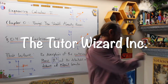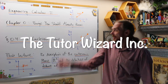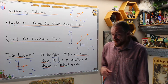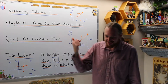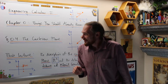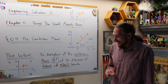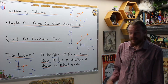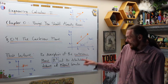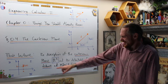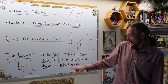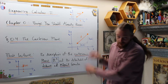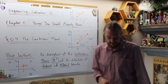Alright, welcome back. This is the Tudor Wizard, I'm Adrian. Please subscribe right here. We're doing Engineering Calculus 1. Chapter 0 is Things You Should Already Know — usually they call this an appendix. Section 0.4 is going to be the Cartesian plane. Specifically, this lecture will cover the description of the Cartesian plane R² and then the derivations of the distance formula and the midpoint formula based on knowing the coordinates of the endpoints.